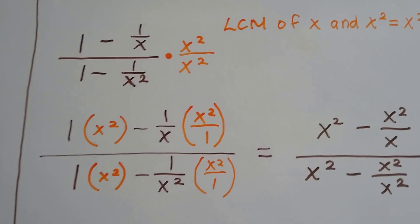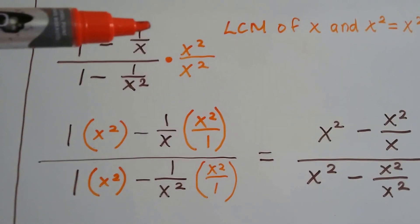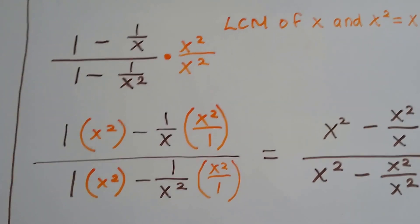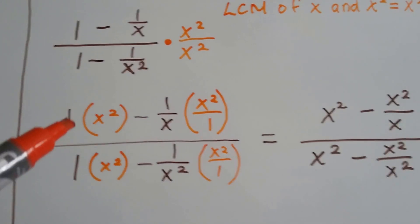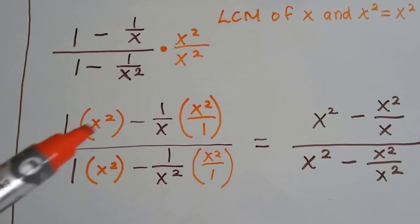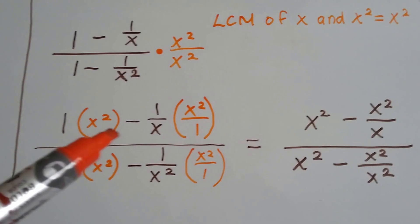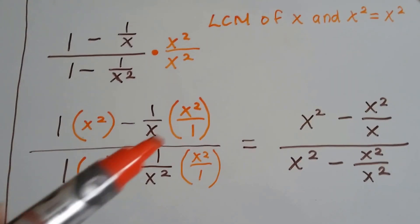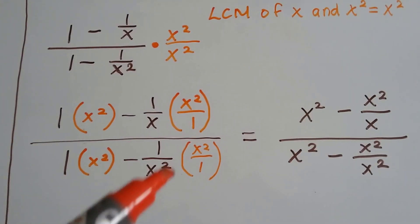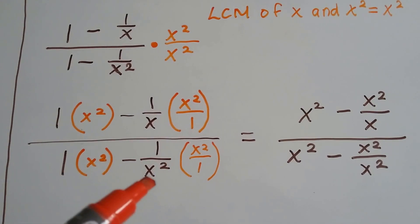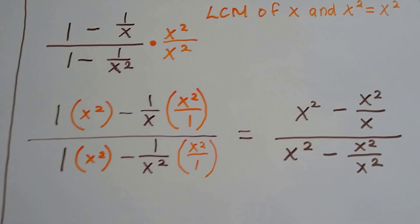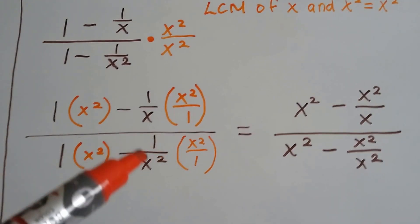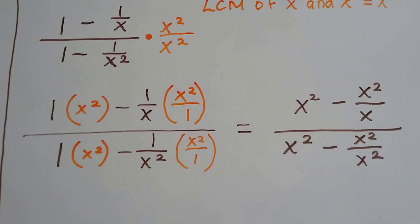What we do is we multiply the numerator and the denominator by x squared over x squared. We multiply the 1 by x squared, we multiply the 1 over x by x squared, we multiply this 1 by x squared, and this 1 over x squared by x squared. I put them over 1 when there's a fraction so that it's easier to go straight across.